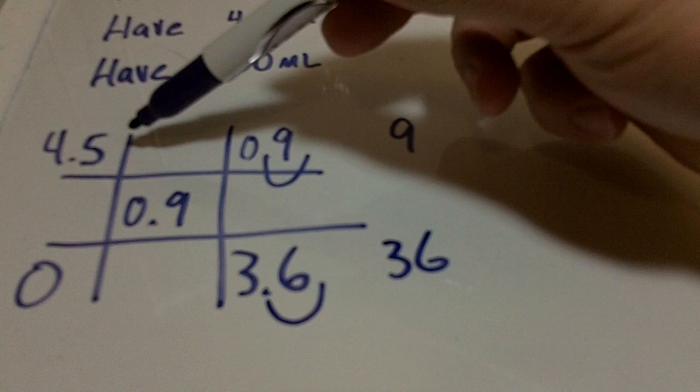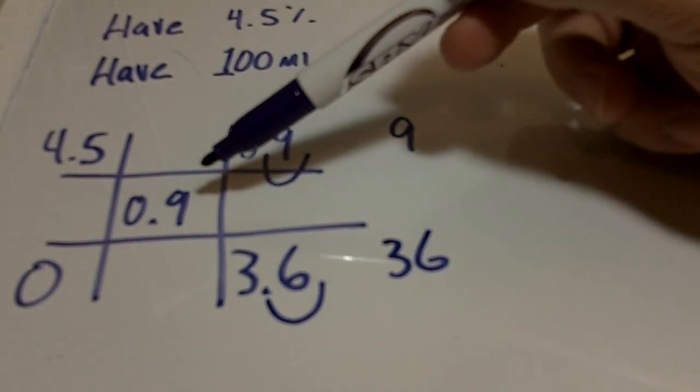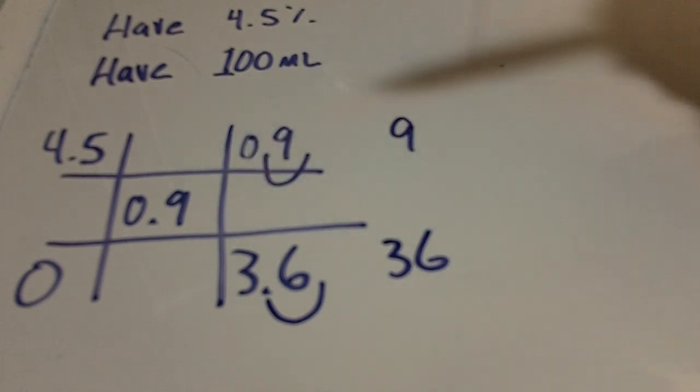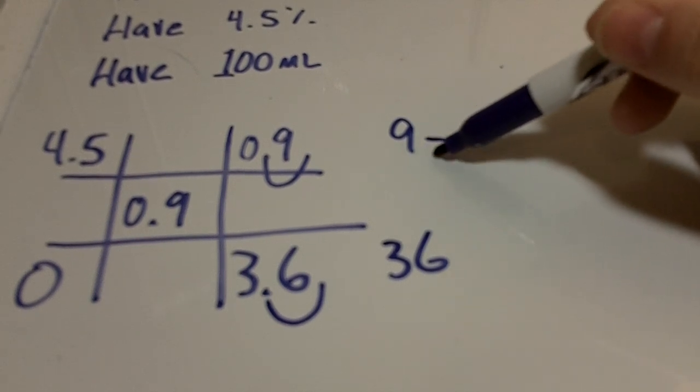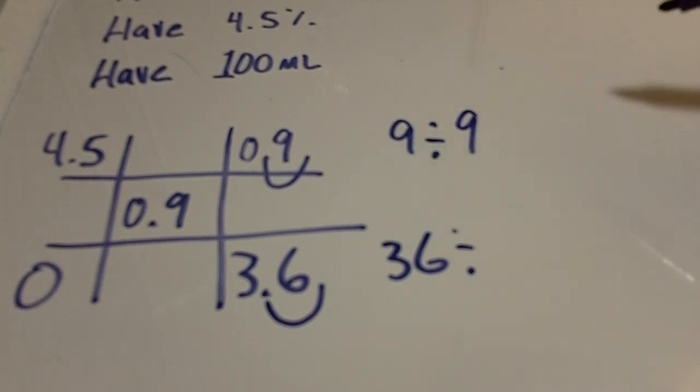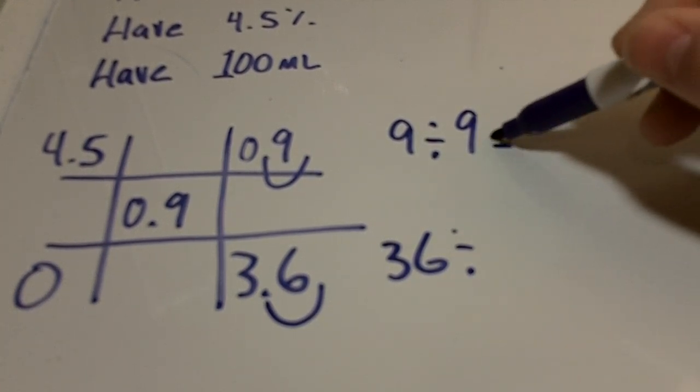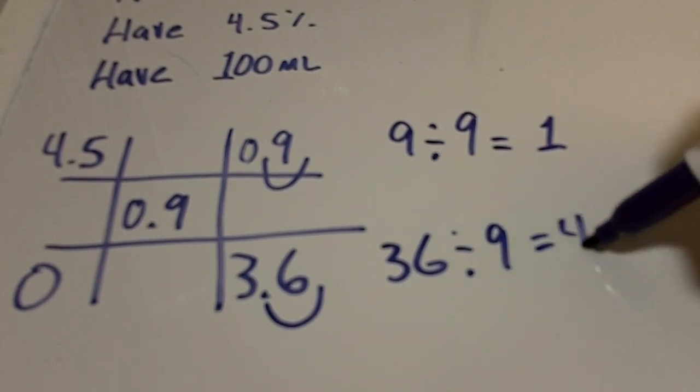So if we took nine parts of the 4.5 percent and 36 parts of the zero and put it all together, that would give us a solution of 0.9 percent. But to make things even easier, I'm going to reduce these numbers even more. I can see they're both divisible by nine. So if we divide this by nine we get one, and this by nine we get four. So what this tells me is that it's a one to four ratio.